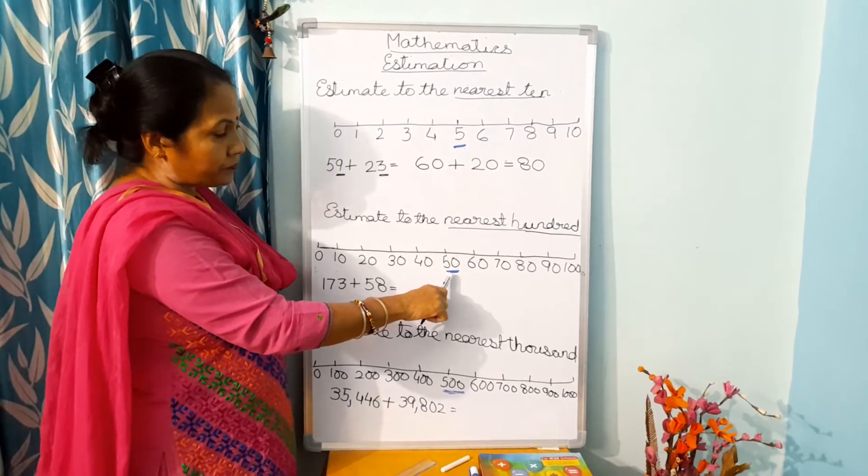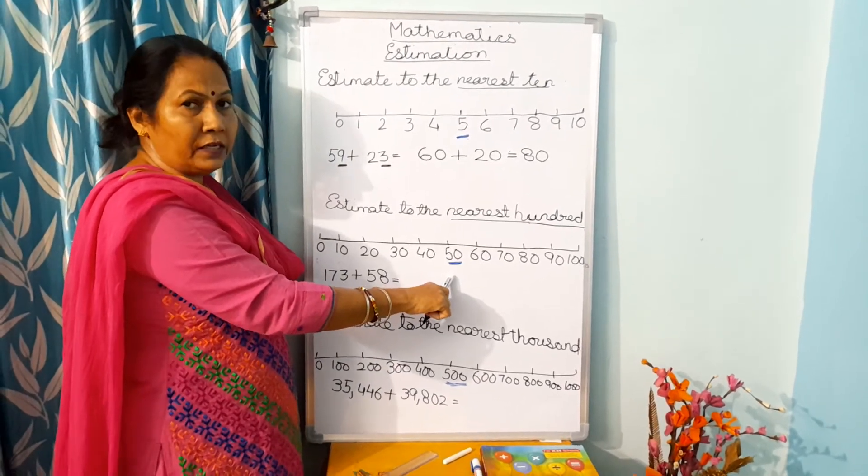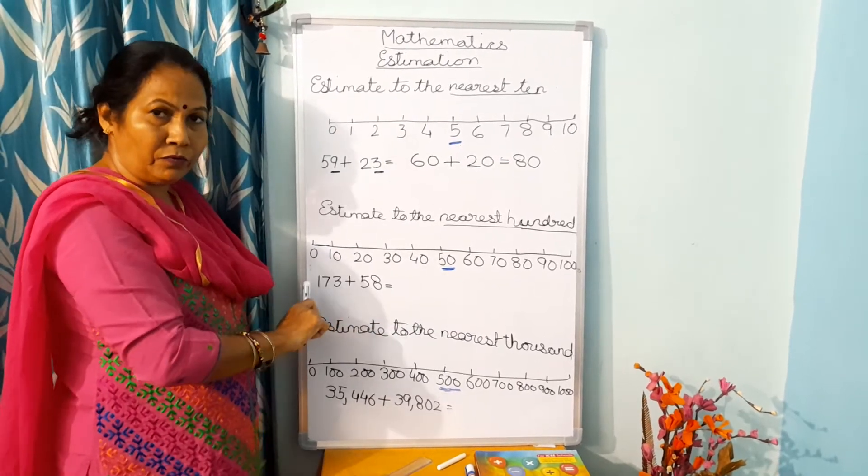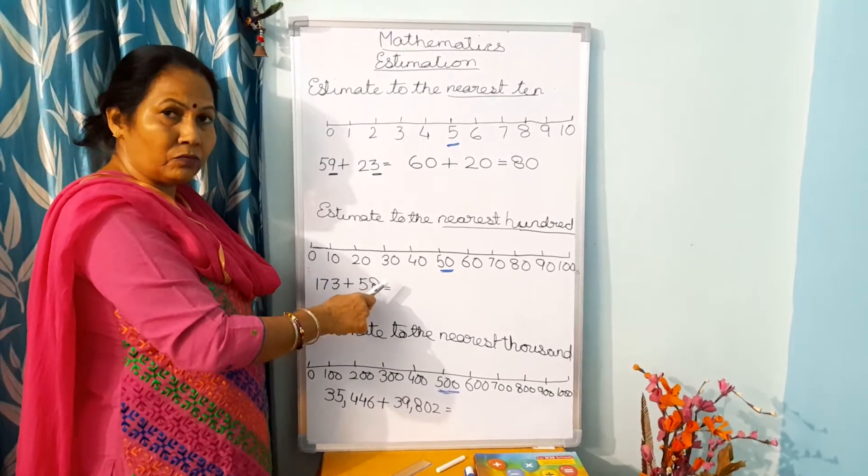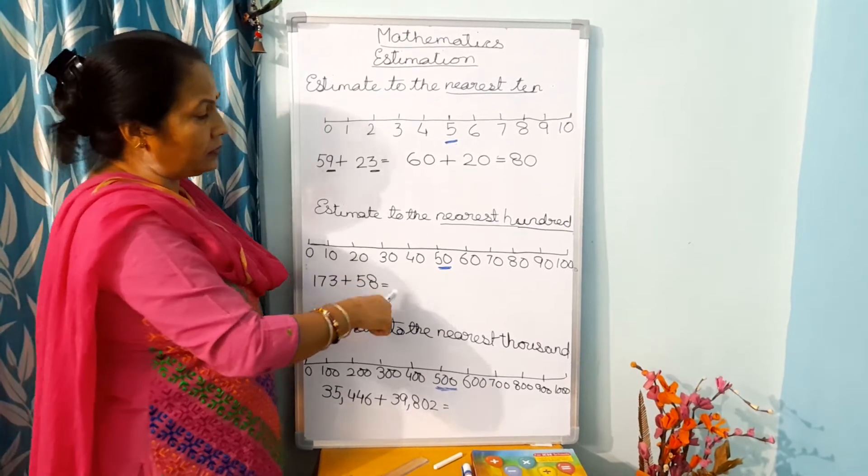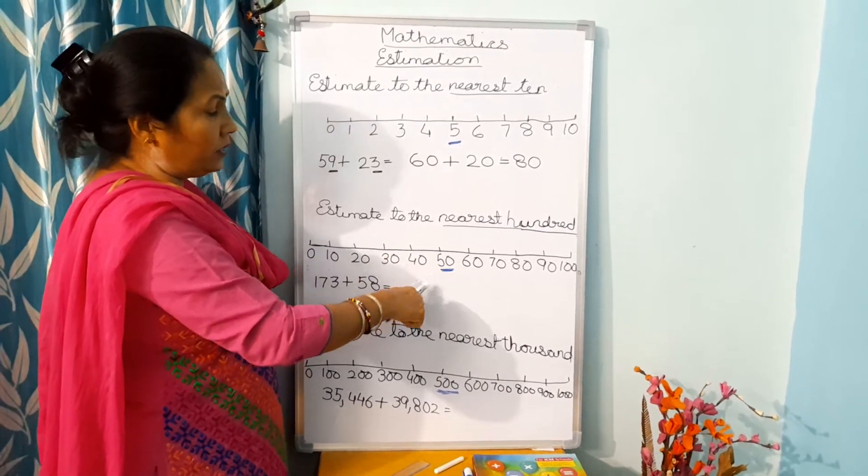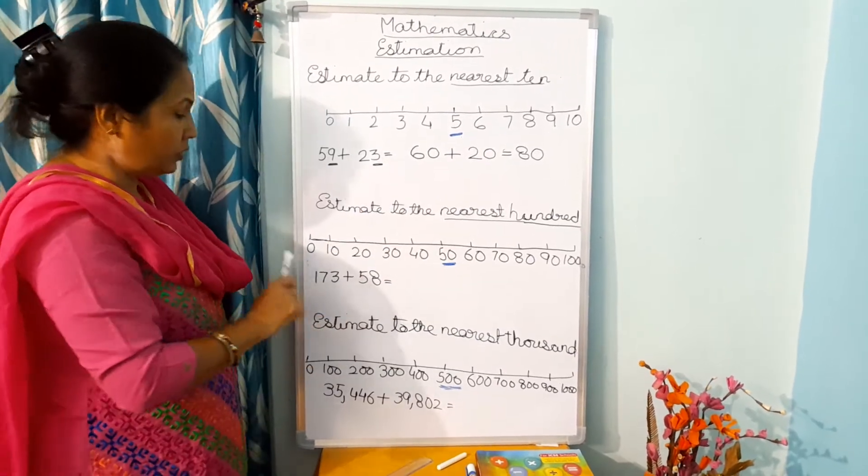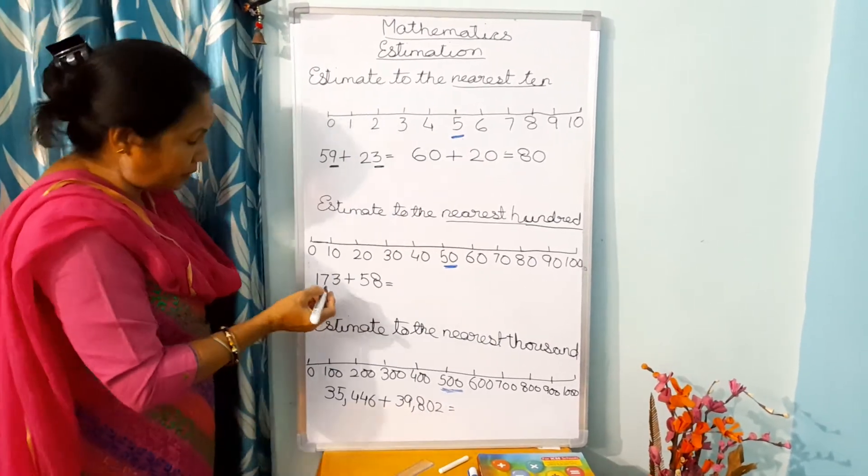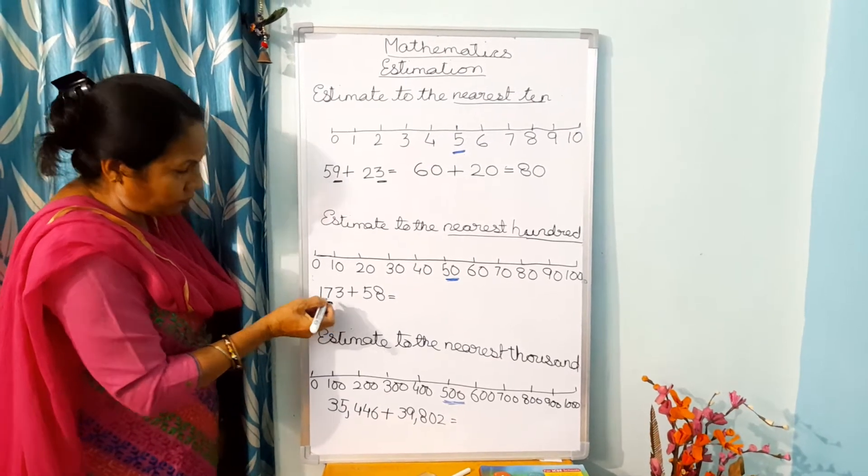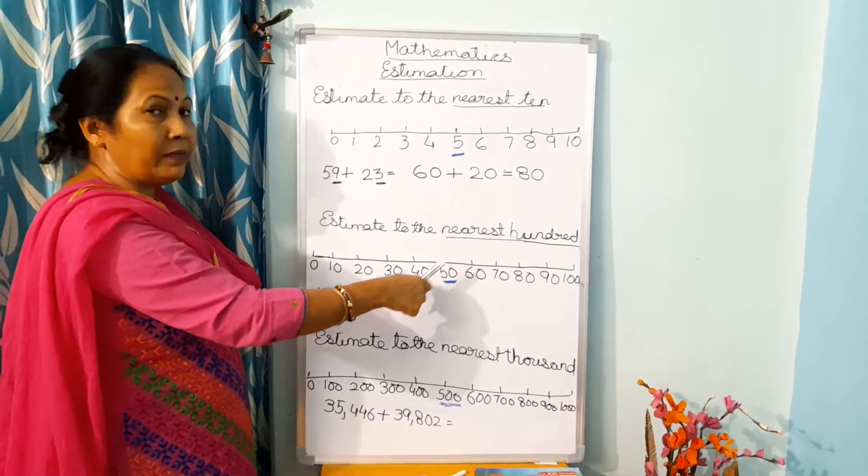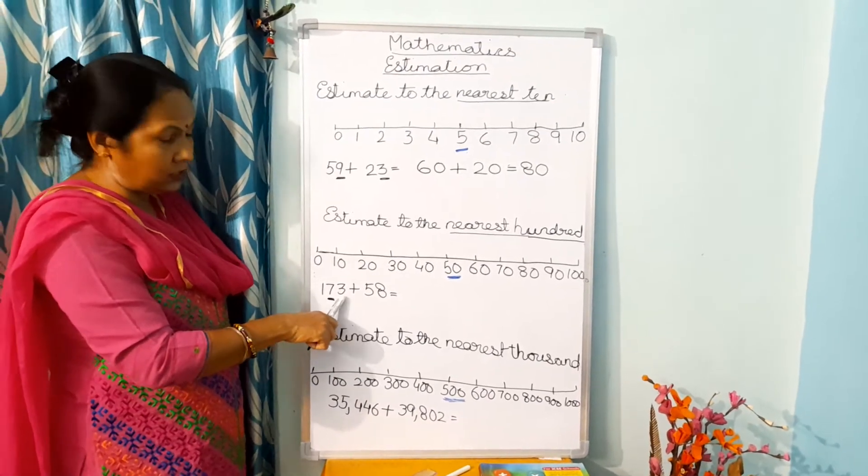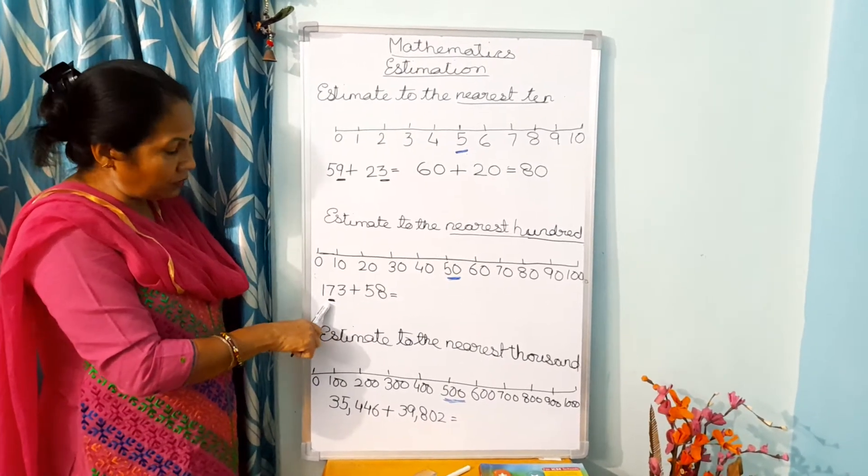Now here also 50 is in the center, so all the numbers before 50 are of less value and the numbers after 50 have more value. So here you will see the 10's number. Now you are not going to, when you have to estimate to the nearest 100, you will see the 10's number. You will not see the 1's number.